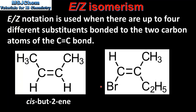If we look at the molecule on the right we can see that there are four different substituents bonded to the carbon atoms of the carbon-to-carbon double bond. Now it becomes more difficult to use the cis-trans notation, so instead we'll use the EZ notation to name the two isomers.